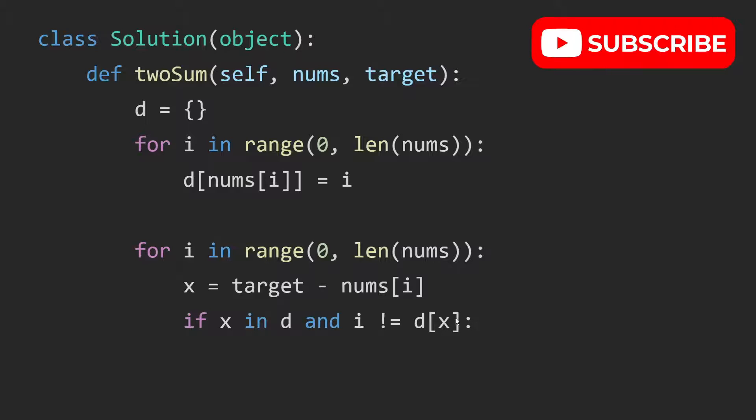So the index of x is this. That's the index of x. We also have to make sure that the index of x is not equal to the index of i in the array. So why is this the case? Well, we cannot return a list,